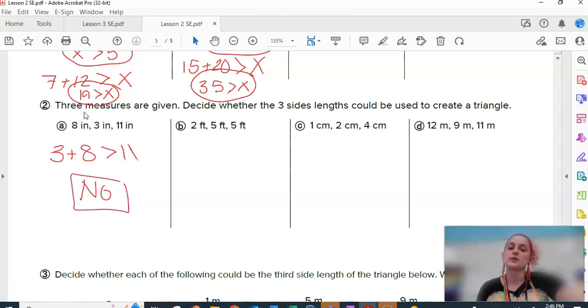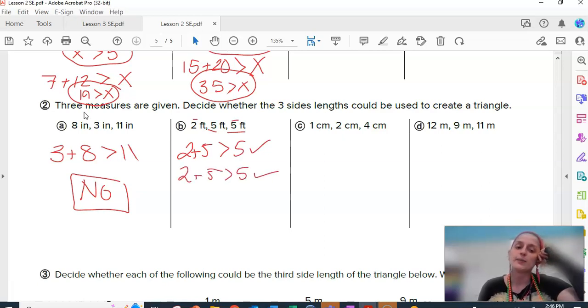2, 5, 5. That would be an isosceles, because those two are the same. Is 2 plus 5 bigger than 5? Yes, it is. How about 2 plus the other 5? Is that bigger than 5? Still yes. How about 5 plus 5? Is that bigger than 2? Why, yes it is. All three cases work. That is a triangle. So, that's what you're doing for C and D.